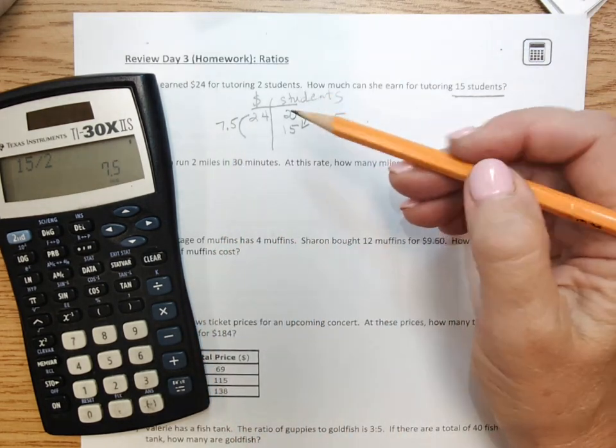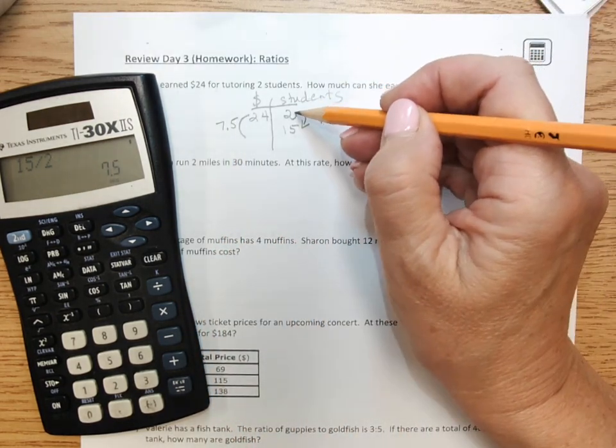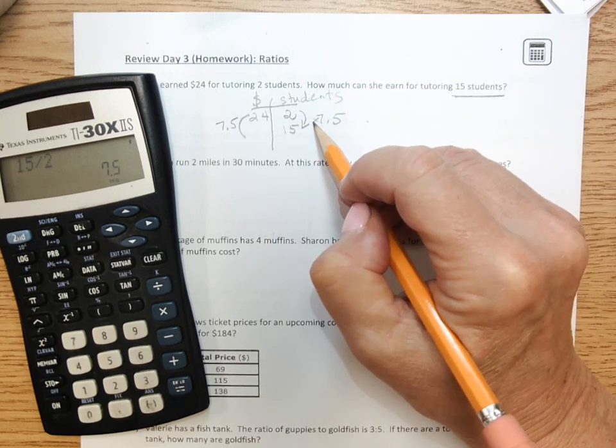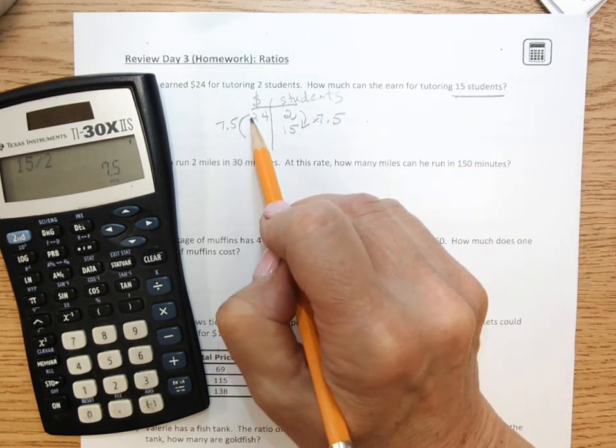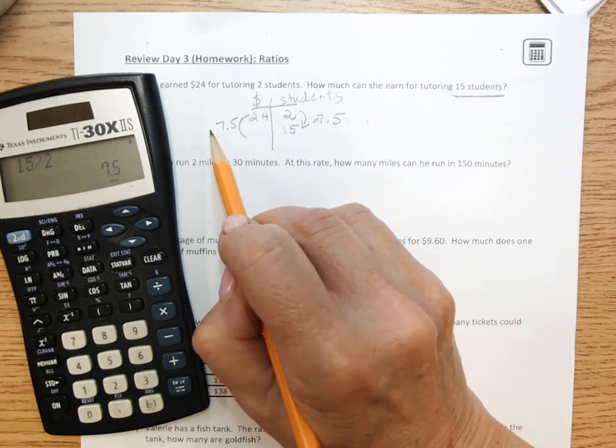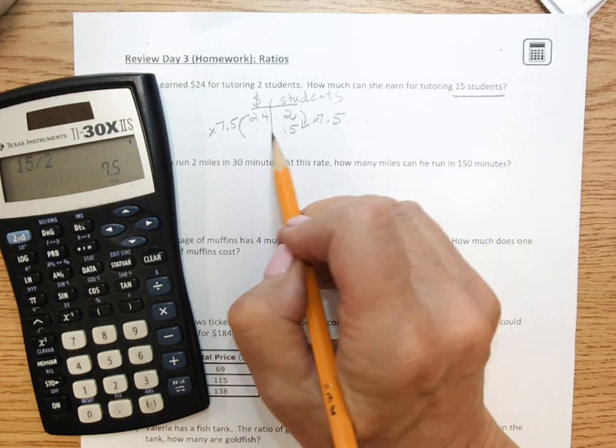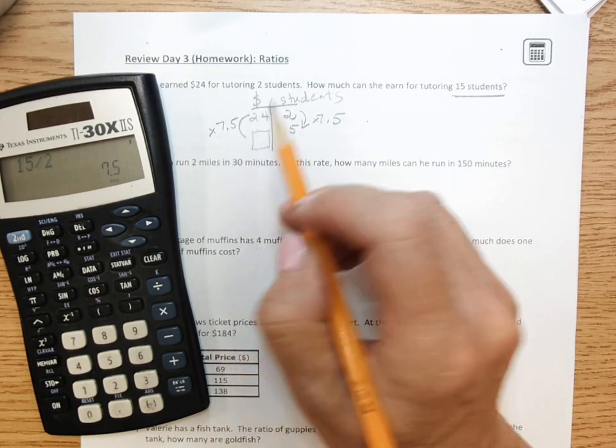And then I look over here and I'm getting from a little number to a big number, which means I'm going to be multiplying. So I have to go over here and multiply. So please multiply 25 by 7 and a half and you'll get your answer.